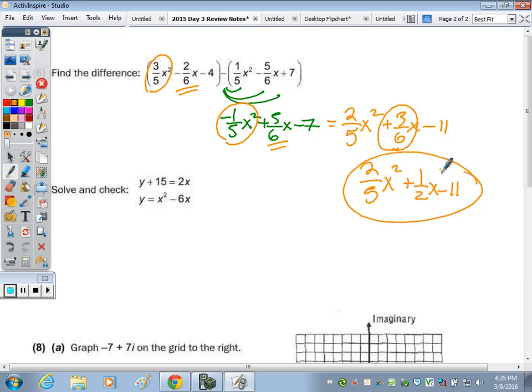Solve and check. So let's set up and solve this system algebraically. So if y is equal to x squared minus 6x, I'm going to substitute that up here. So now the equation would be x squared minus 6x plus 15 equals 2x. I'm going to bring the 2x over by subtraction, which would give me negative 8, because negative 6 minus 2.